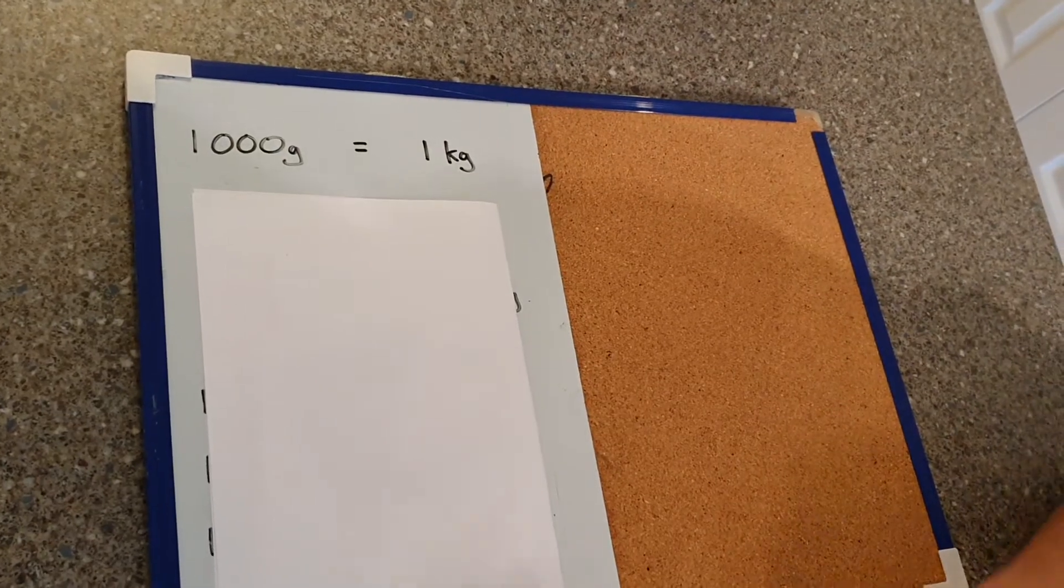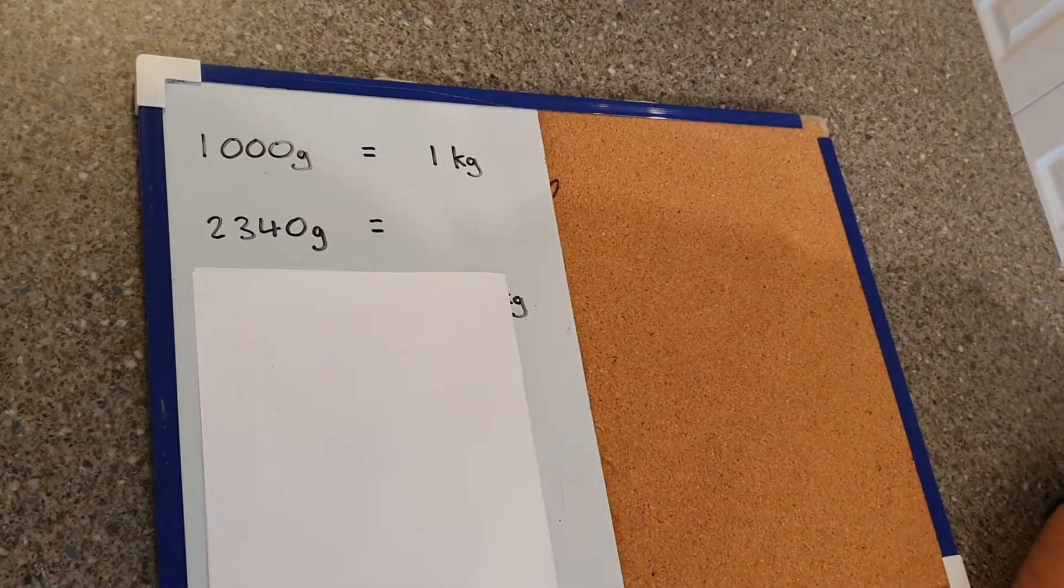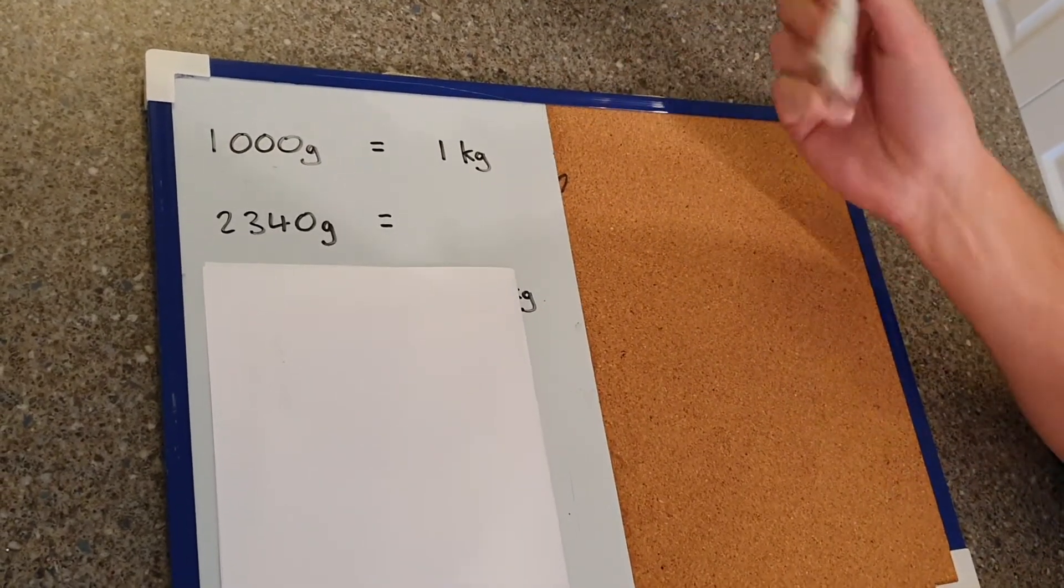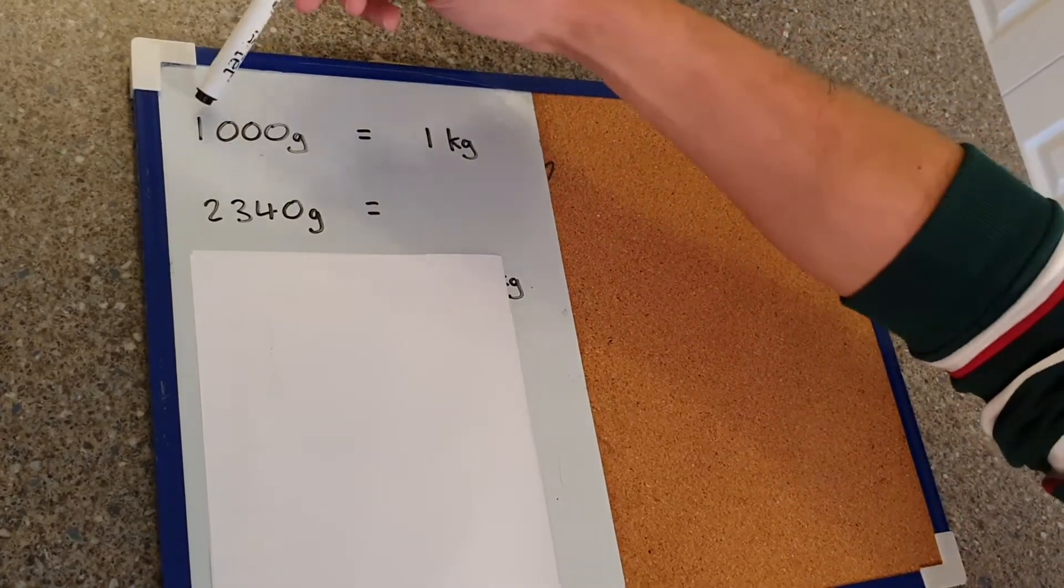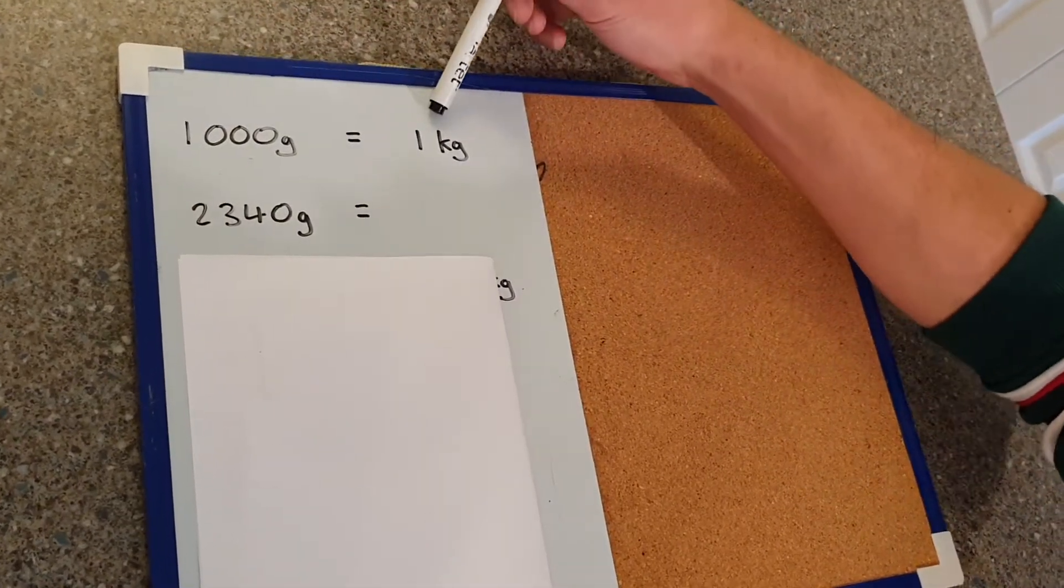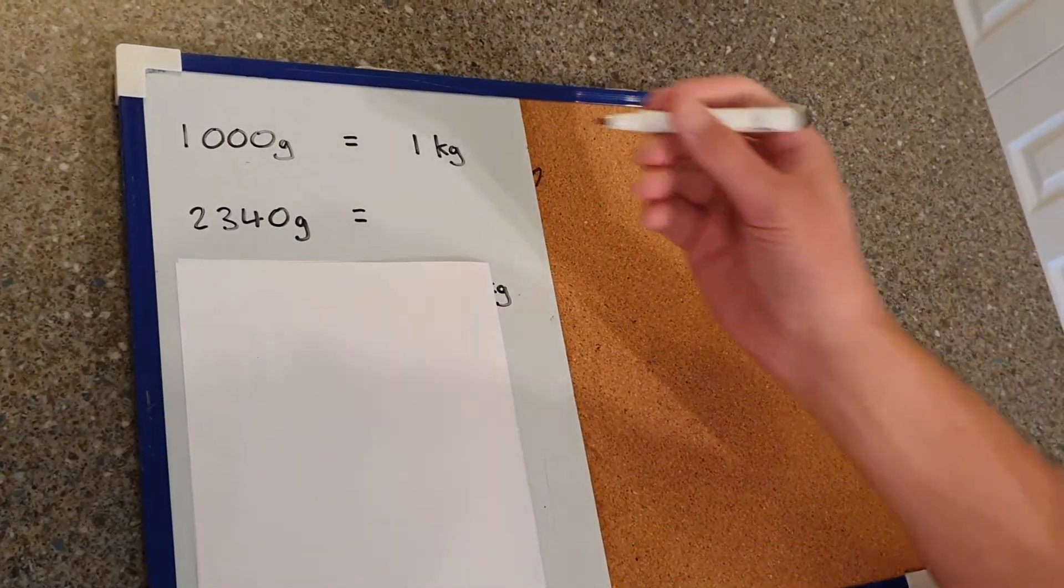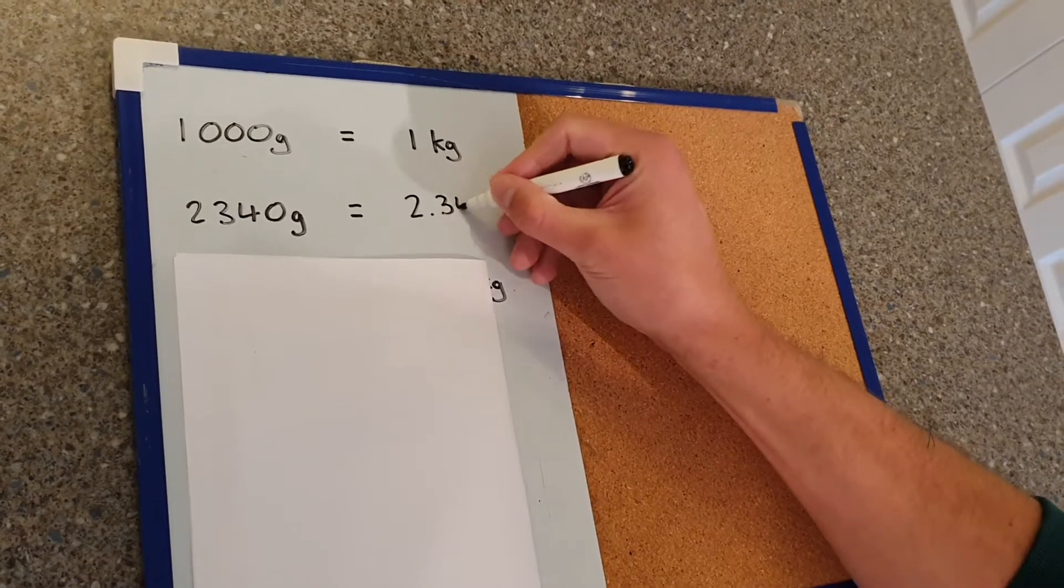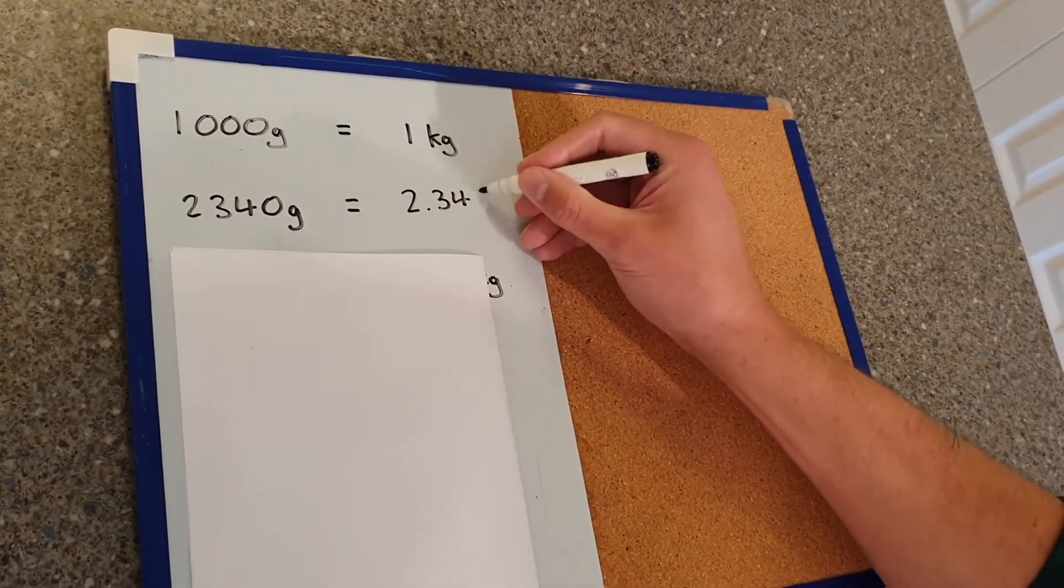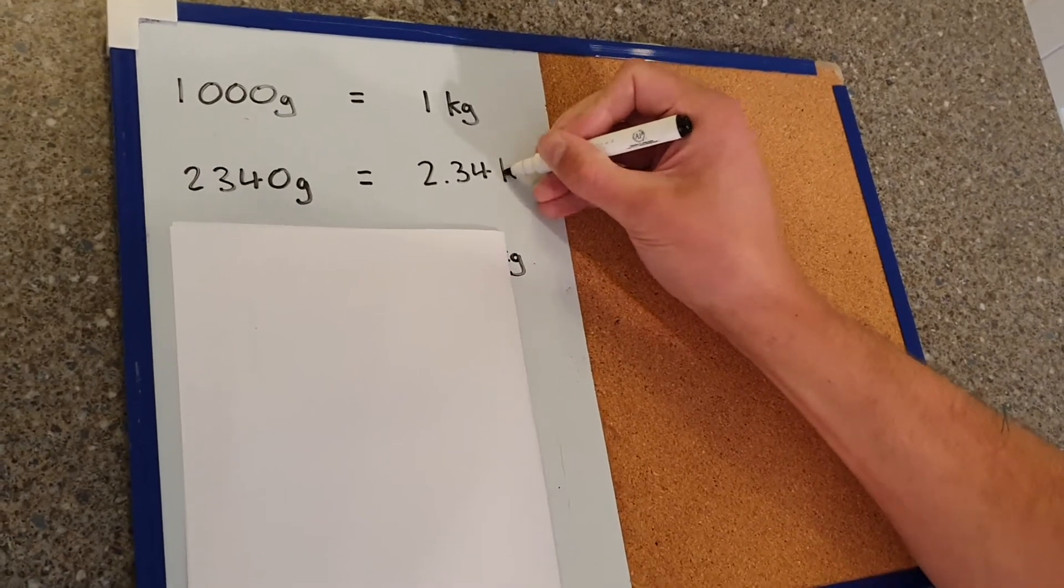So if we had to convert 2340 grams into kilograms, the way I remember the 1000 grams equals 1 kilogram, I divide a thousand by a thousand to get one. So here I must divide this by a thousand and that would give me 2.34 kilograms.